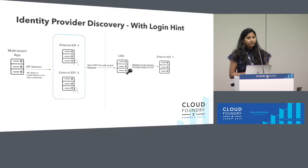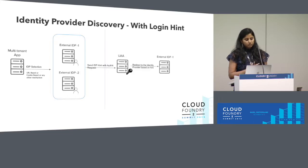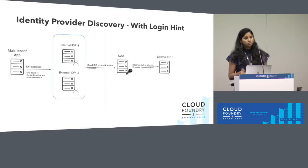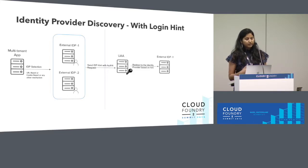The next feature is identity provider discovery with login hint. UAA already supports identity provider discovery using the email domain mechanism. Prior to this feature, if you wanted to discover which identity provider to log into, UAA could look up the domain, map it to an external identity provider, and redirect there. But sometimes the application has more context about which identity provider should be used for authentication. For example, Cloud Foundry is a good example — we have many customers who use multiple identity providers with one Cloud Foundry deployment, and in that scenario, the application has more context about which identity provider to use.